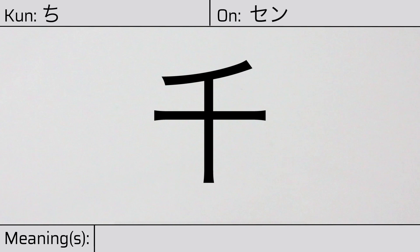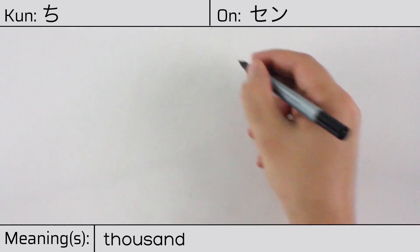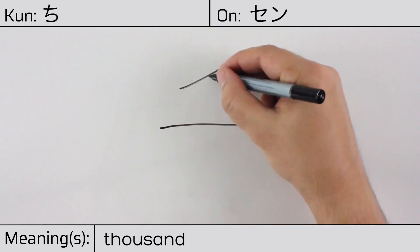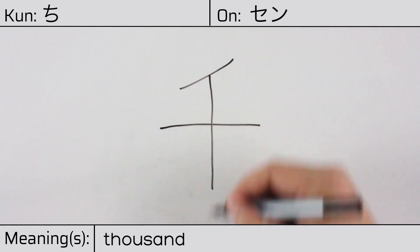This character has the meaning thousand. Here is the stroke order: ichi, ni, san.